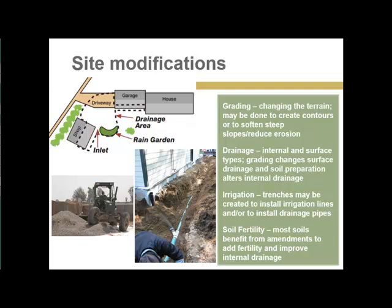Grading is tied to drainage because it changes the surface drainage. Soil preparation — either by installing a water barrier or putting in drain pipes — can improve and direct the flow of water through the landscape.